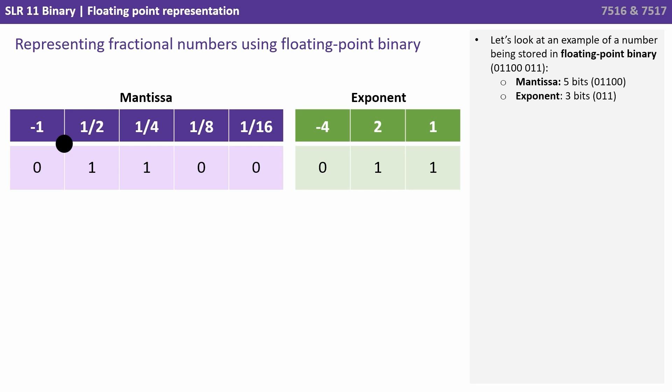Let's look at an example of a number being stored in floating point binary. 0, 1, 1, 0, 0, 0, 1, 1. Those first 5 bits are the mantissa, and the last 3 bits are the exponent.